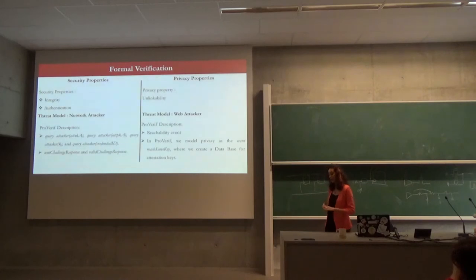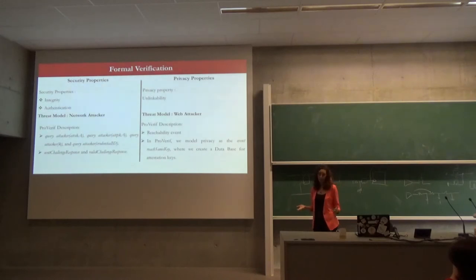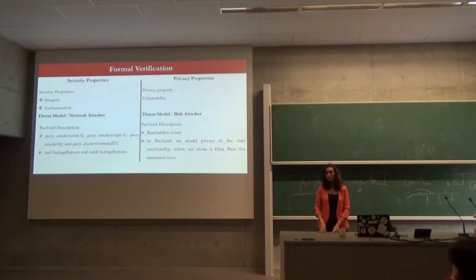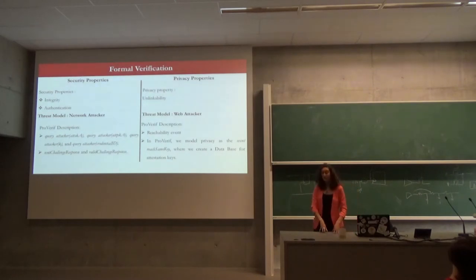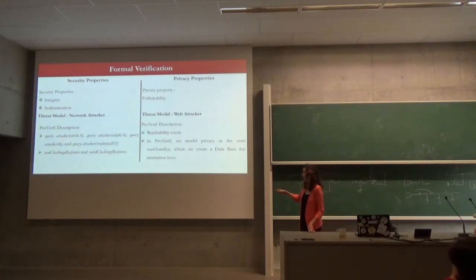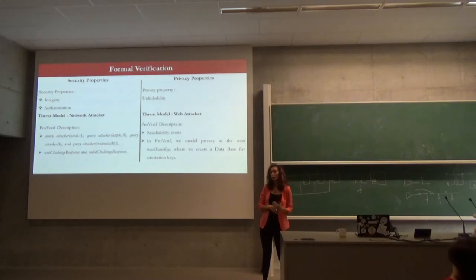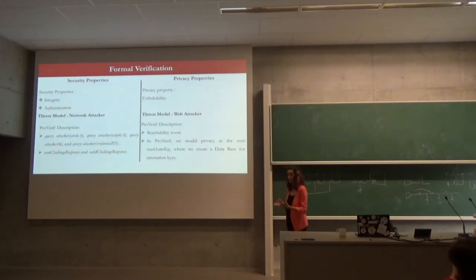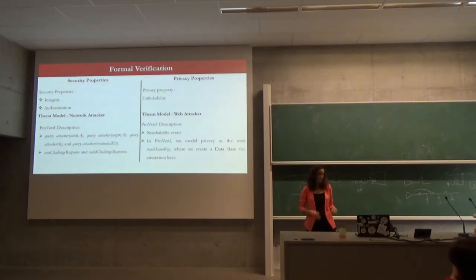For example, the scenario is: you have one authenticator and want to log into Facebook with two different accounts using that one authenticator. Theoretically, with this protocol, your accounts won't be linked because two different key pairs are generated. In the second scenario, you use one authenticator with two relying parties — Facebook and Twitter — and we want to see if those two accounts are linked. For this, we created a database that stores all the information sent during registration, and we check whether the attacker can reach the same key.